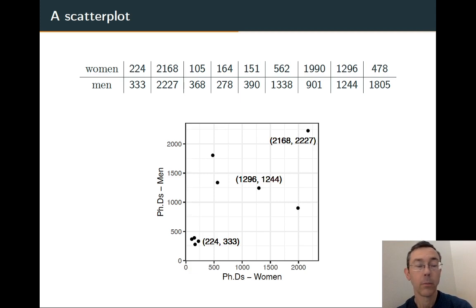We plot the women as x values, the men as y values, and we get a bunch of points. I've labeled a few of them. For example, in the upper right, we have 2168, 2227. That's matching up with the second data column in that table.